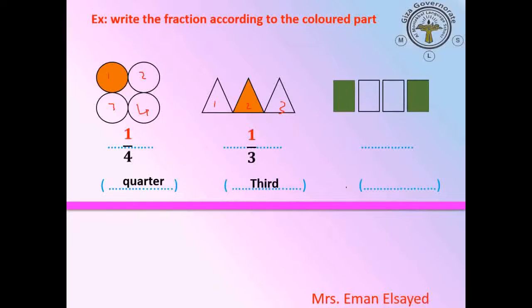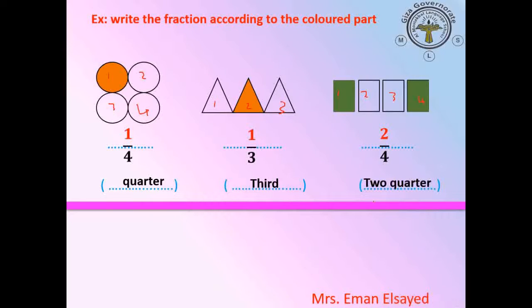Last example: we have a set of rectangles. I take 2 rectangles and shade them. What is the fraction of the shaded part? Two parts shaded out of four total: 1, 2, 3, 4. The fraction is two out of four — two quarters or two fourths. Very good.